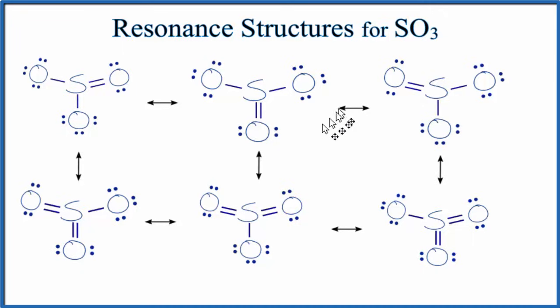They're not in equilibrium. They're not switching back and forth. All it means is that these are different ways to draw resonance structures for SO3. Partially, it's due to a limitation of what we can describe in a Lewis structure. These aren't switching back and forth. They're just different ways to draw it.